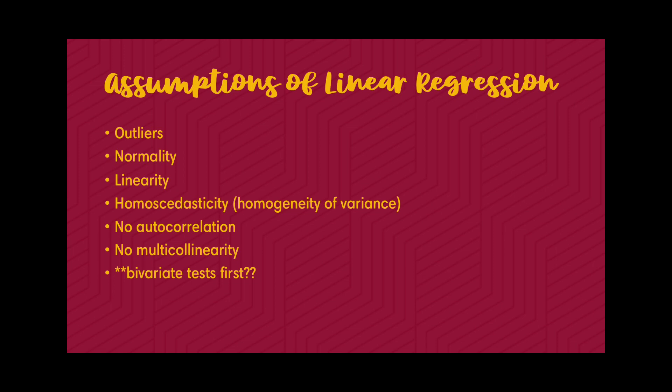The first assumption for linear regression is having a small number of outliers or removing outliers. Outliers exert a strong influence on the regression line by pulling it closer or pushing it away from the majority of data points, resulting in a misleading representation of the relationship. The regression line may be overly influenced by the outlier, leading to inaccurate estimation of the true underlying relationship, affecting the slope, intercept, and other assumptions.